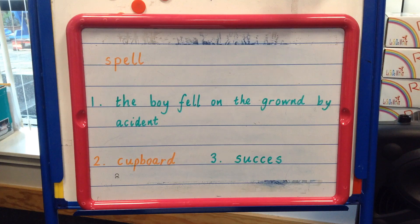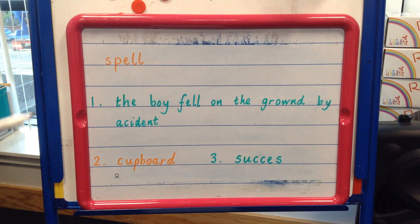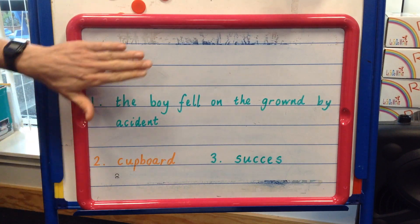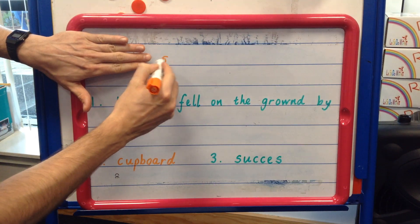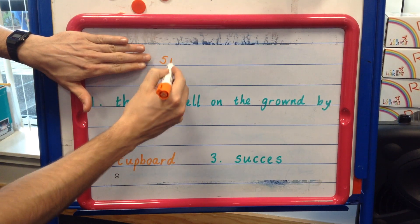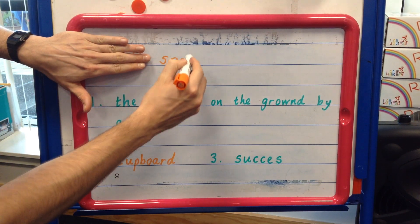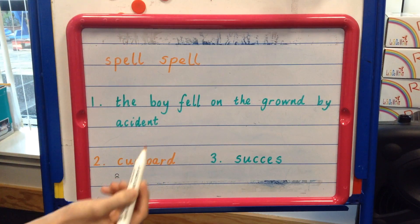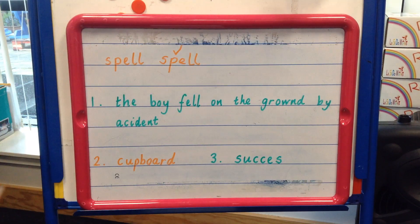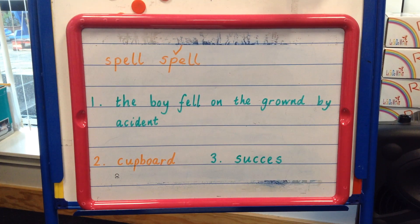Many children may practice their spelling words using the traditional look, say, cover, write, check method. Take a look at this example. This would then be repeated multiple times. Although this can be an effective strategy for many pupils, it is a very passive activity.